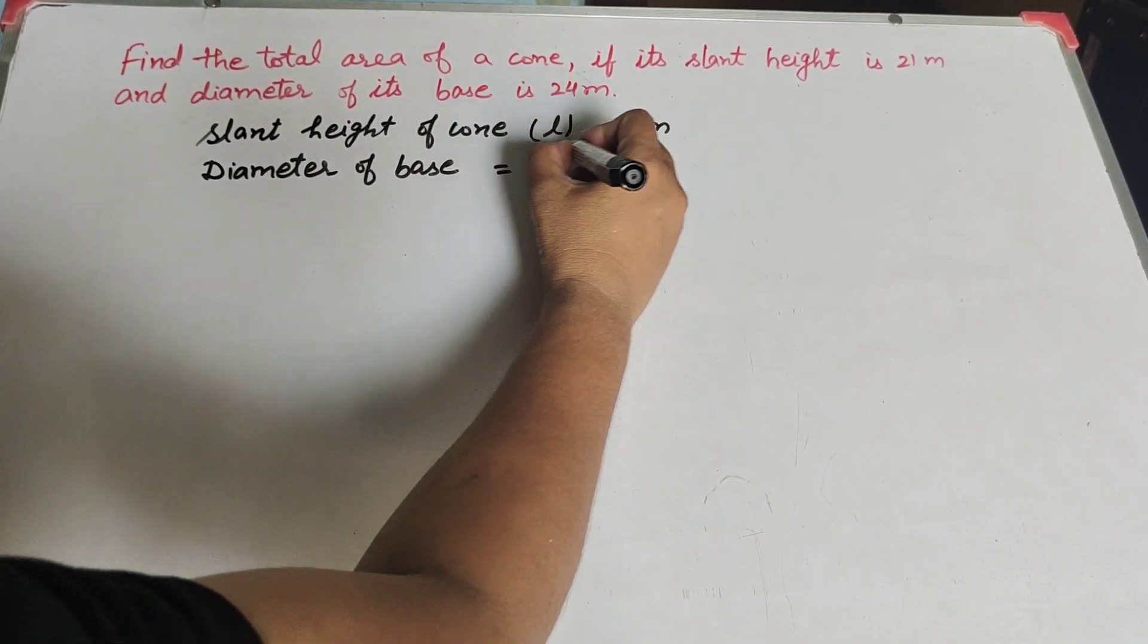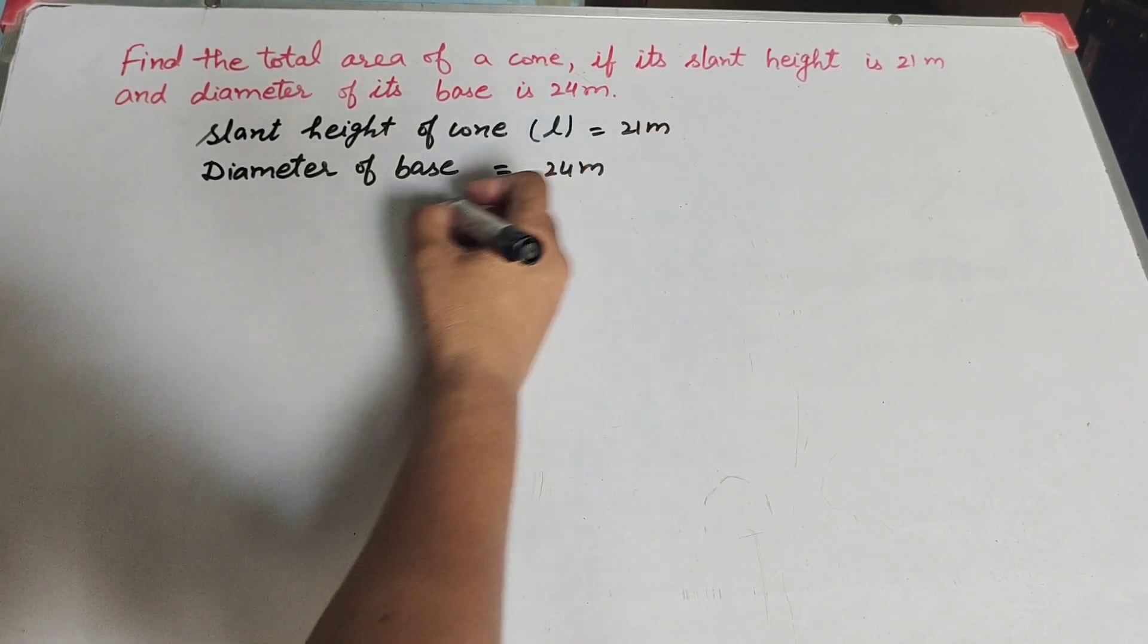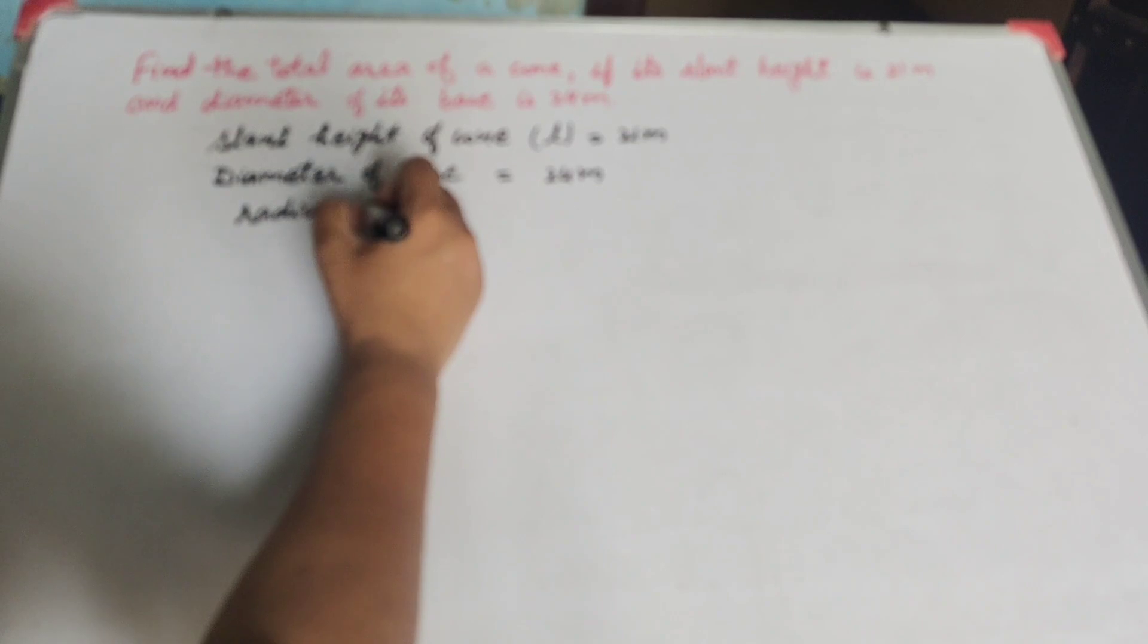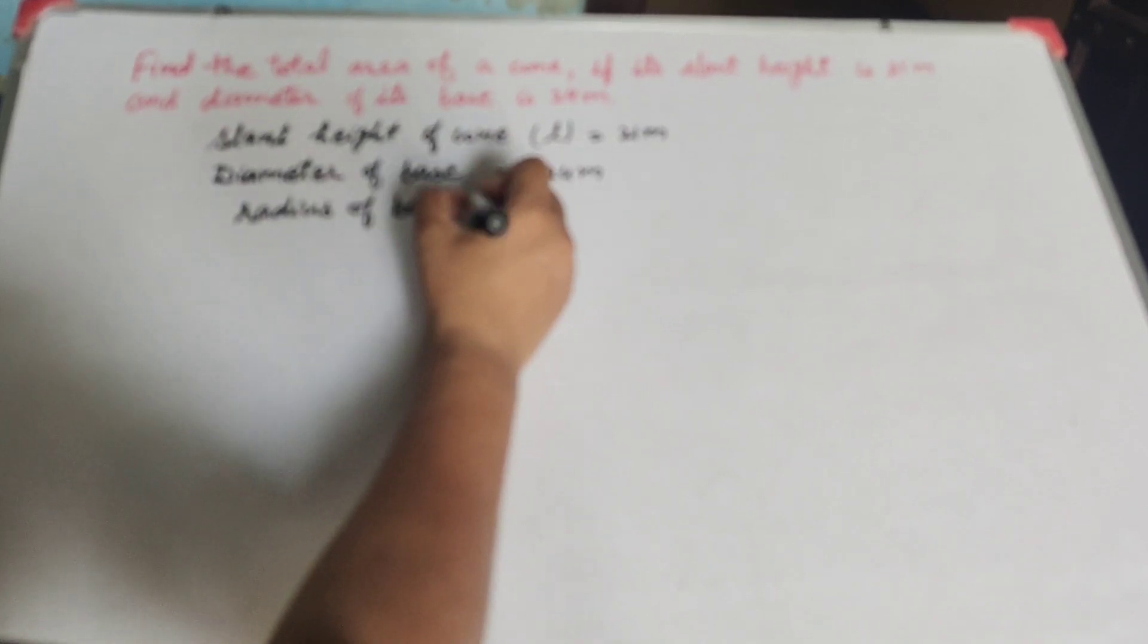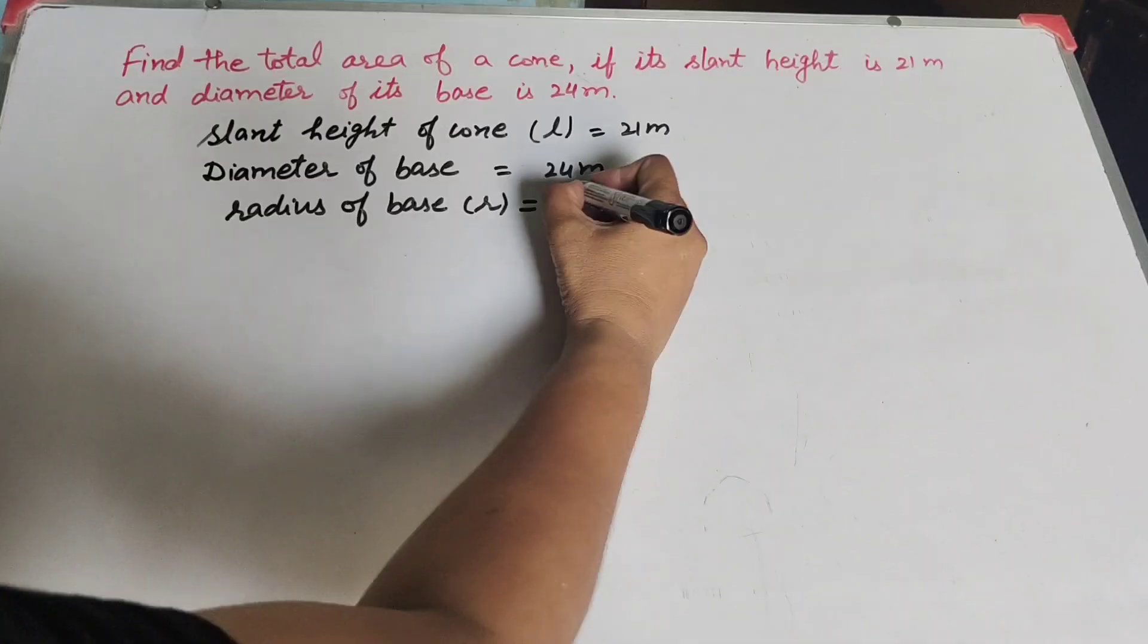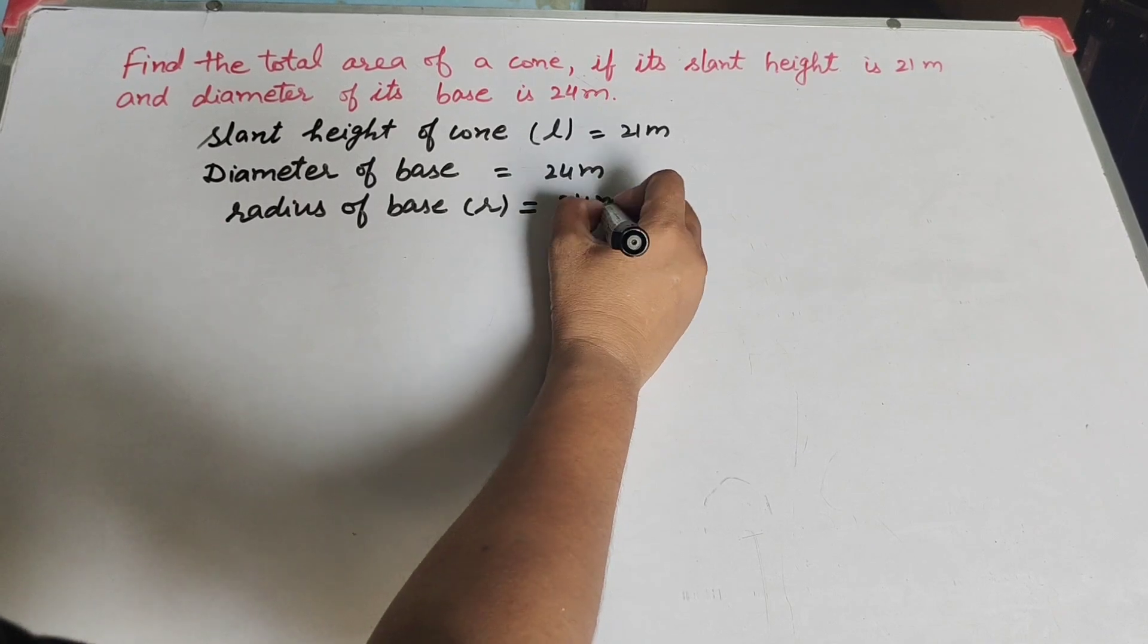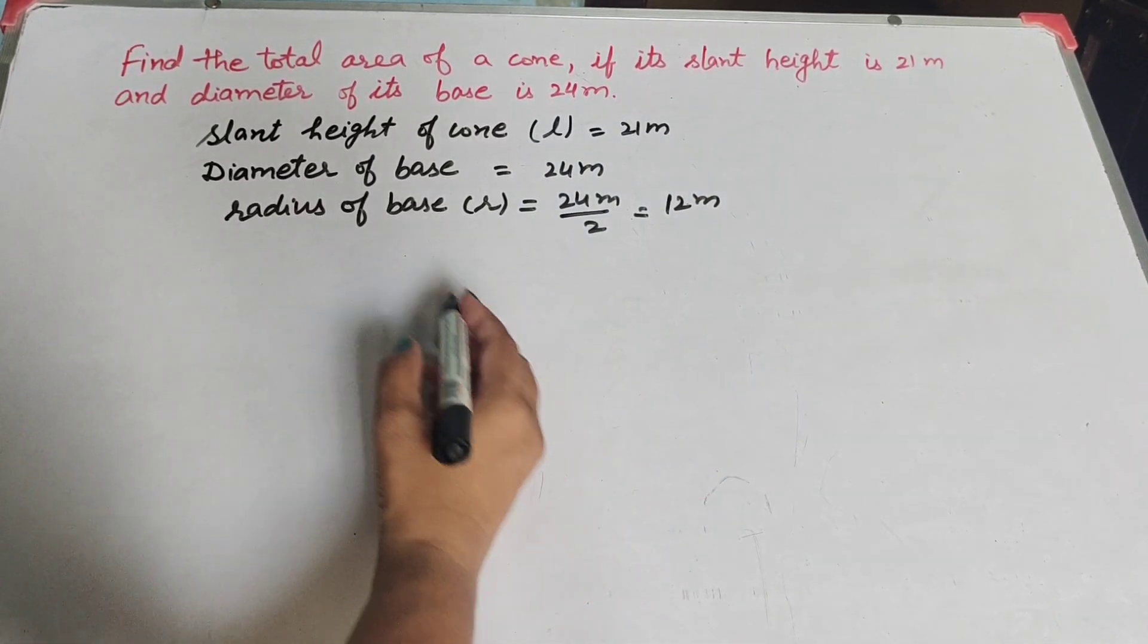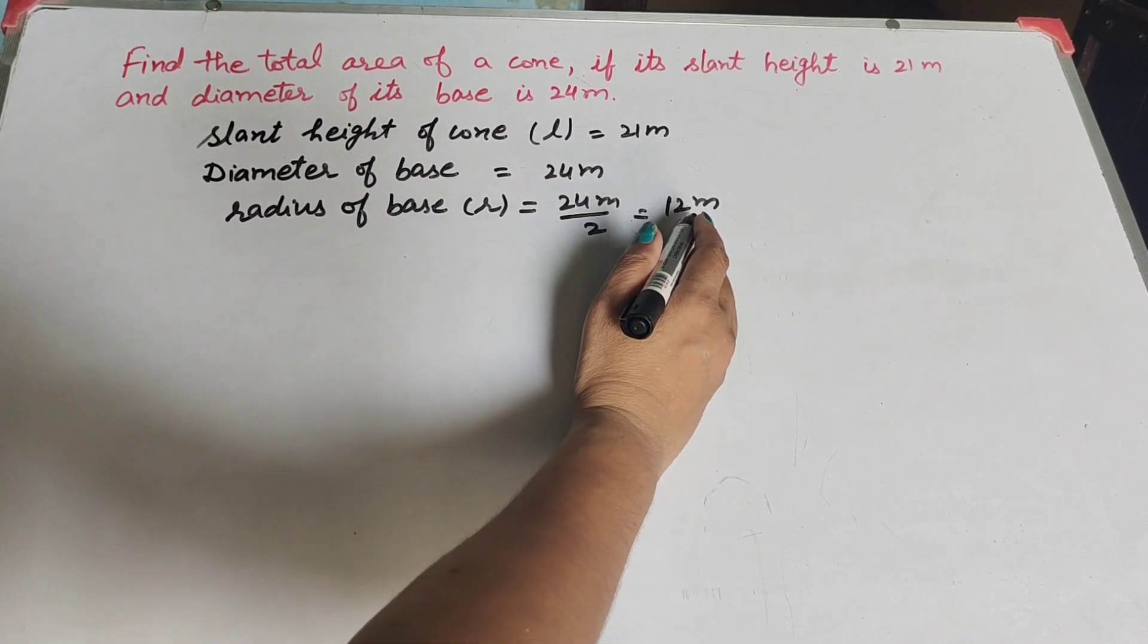We find radius of cone. Radius of cone is equal to diameter divided by 2. Diameter is 24 meters, 24 divided by 2 equals 12 meters. So radius is equal to 12 meters.